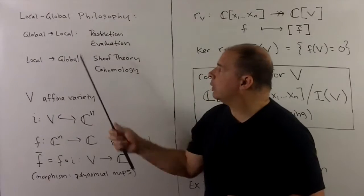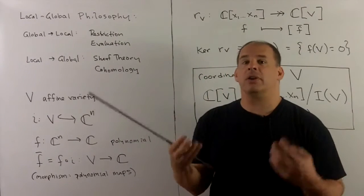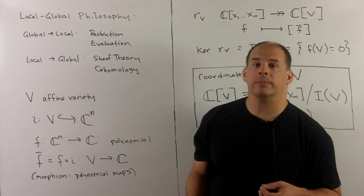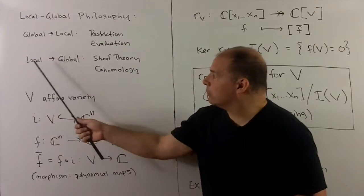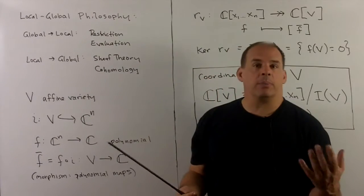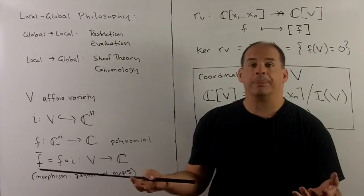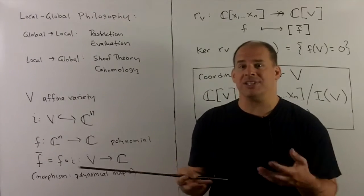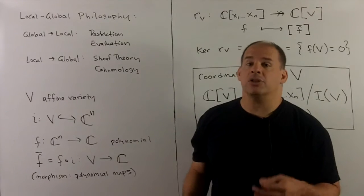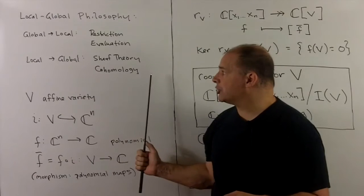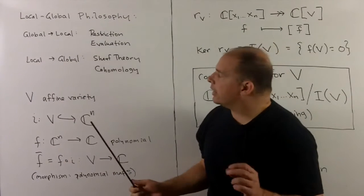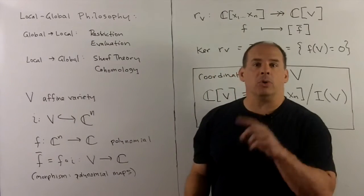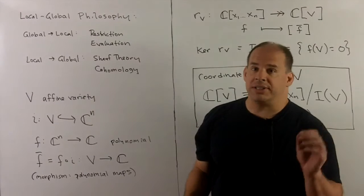So if we're going from global to local, I could take restriction of functions to the open sets, we could also take evaluation, which is a special type of restriction. In the other direction, going from local to global, you have your open sets, on your open sets you have functions, and you want to know if you can patch these functions together to get a global function. So that would bring in tools like sheaf theory and cohomology. Now we're not going to do anything in this series with the second part, but restriction is going to be a good way to formalize our ideas.